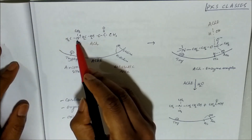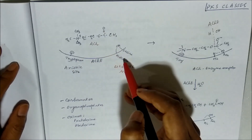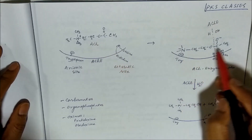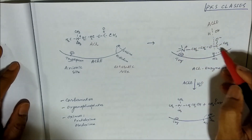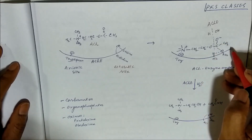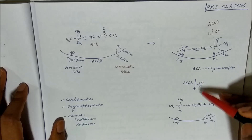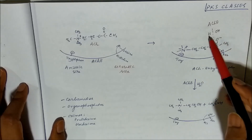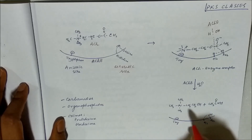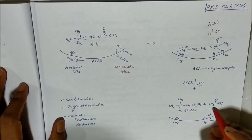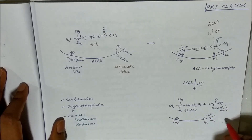The cation binds to the anionic site and the ester binds to the esteratic site. When acetylcholinesterase acts, hydrolysis occurs - H binds at one site and OH at the other - and we get choline and acetic acid as products. The enzyme is then freed and available again.